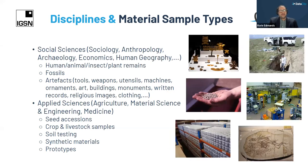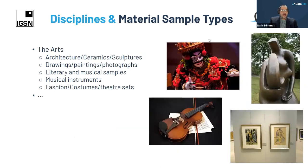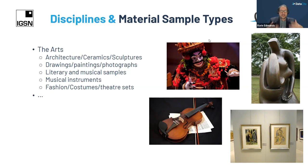There are also different types of samples from social sciences — sociology, anthropology, archaeology — and from applied sciences, for example agriculture, material sciences, engineering, and medicine. We could even think about this in the arts: architecture, ceramics, sculptures, and so on. There are probably more sample types and disciplines not listed here, but this really brings home that we are talking about all sample types from all disciplines.